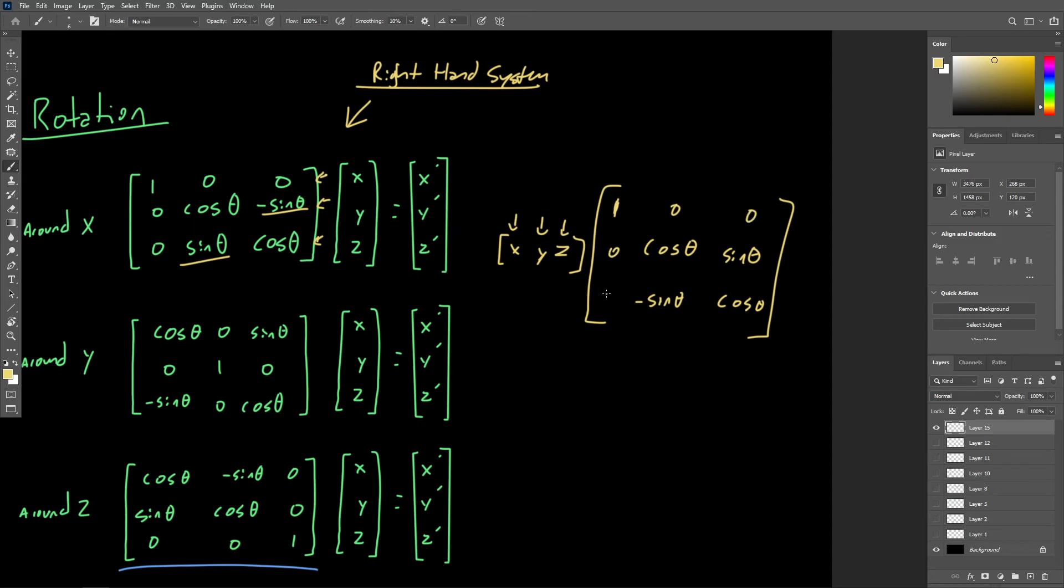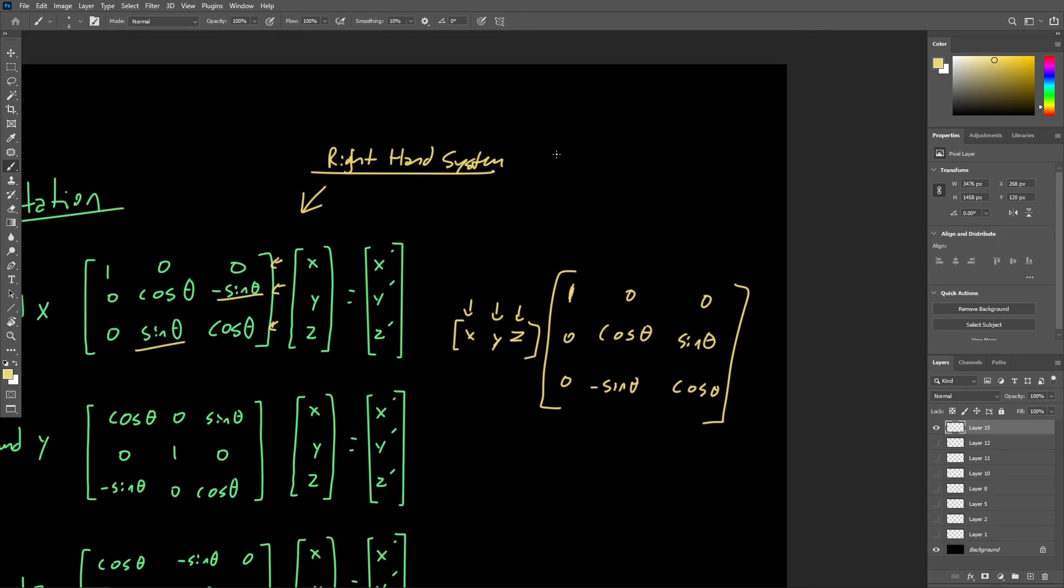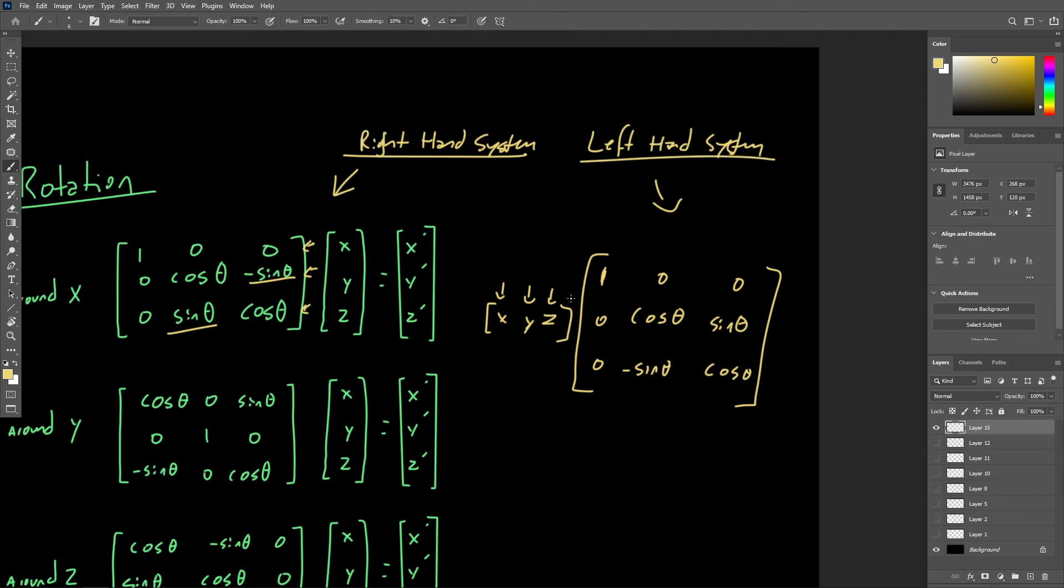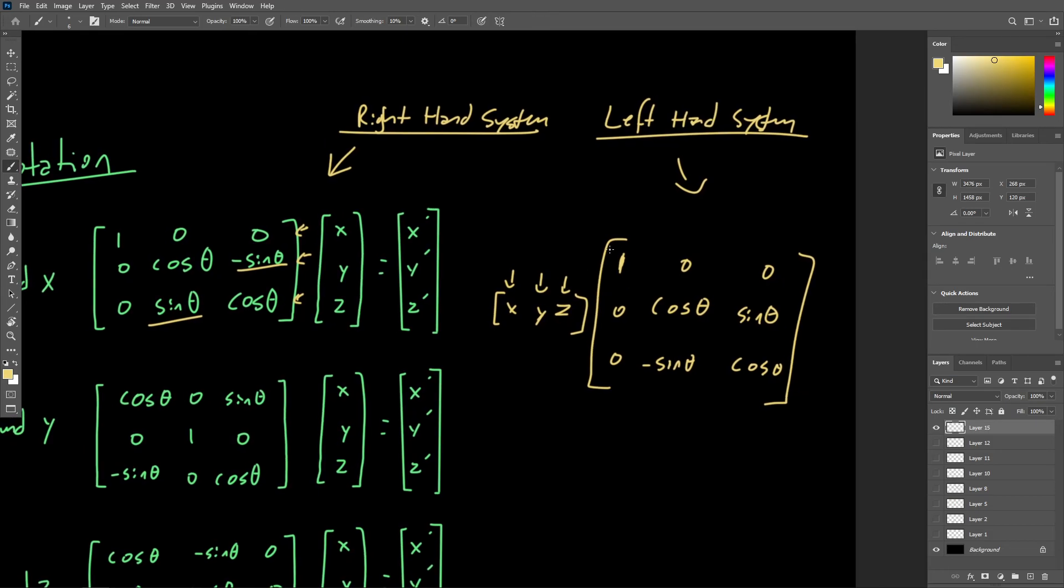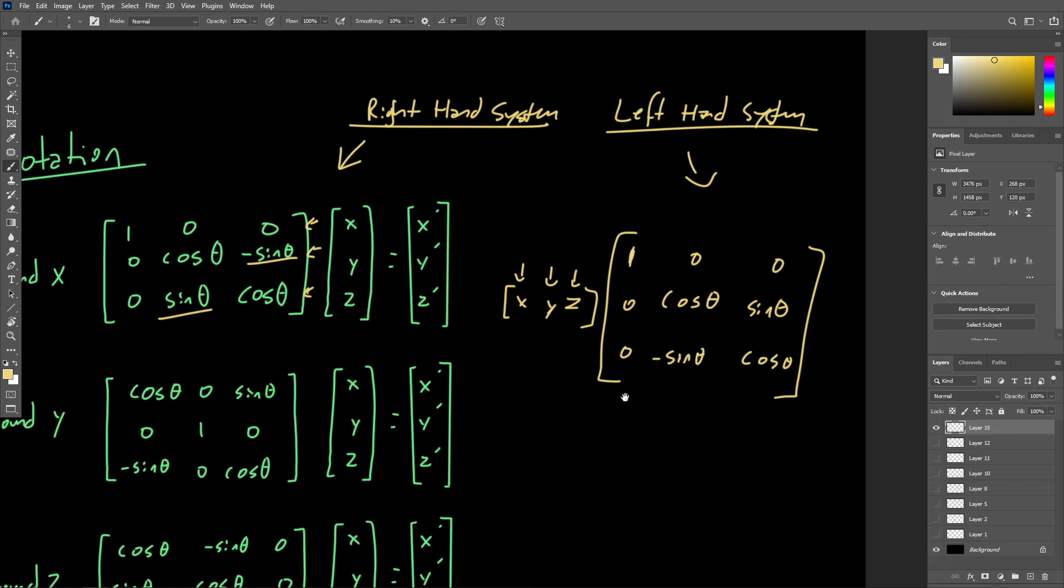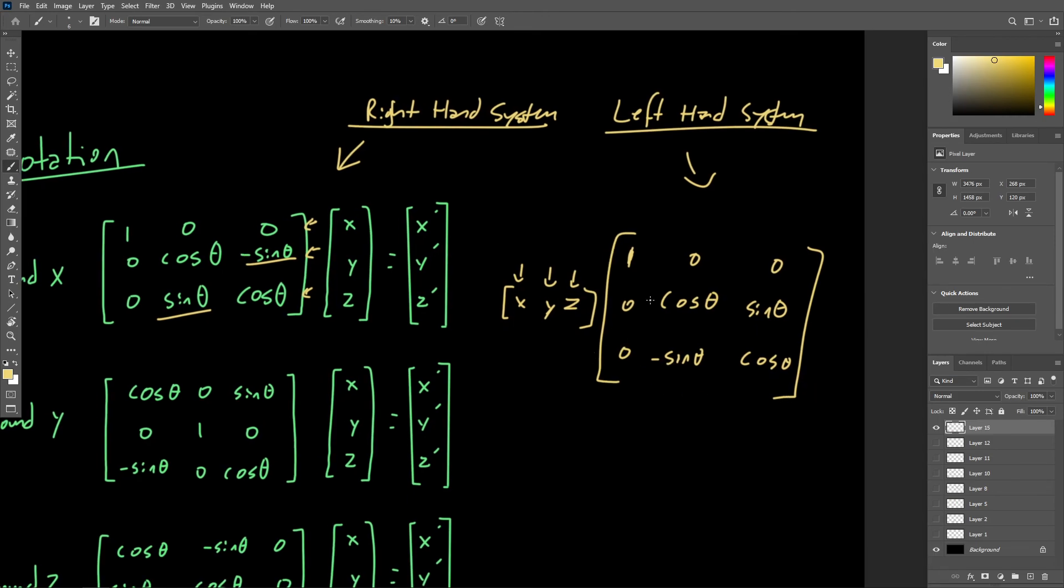So do keep that in mind if working in the left handed system, we will be working with row vectors for individual vectors or points in space. And the transposed version of the transformation matrices, just because of the order that we have to do this matrix multiplication in, in order to get the same results.